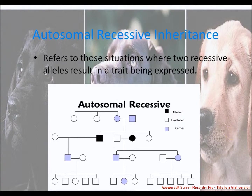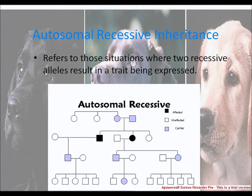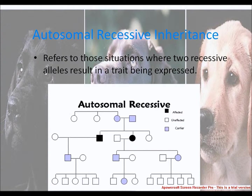In autosomal recessive inheritance, the trait often skips generations and an almost equal number of affected males and females occur. If both parents are affected, all children should be affected. In most cases of unaffected people mating with affected individuals, all children produced are unaffected. When at least one child is affected, it indicates that the unaffected parent is heterozygous. Then approximately half the children should be affected. Most affected individuals have unaffected parents. This is the autosomal recessive pattern.